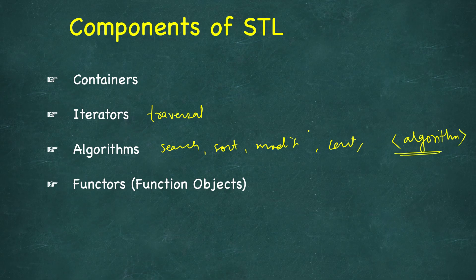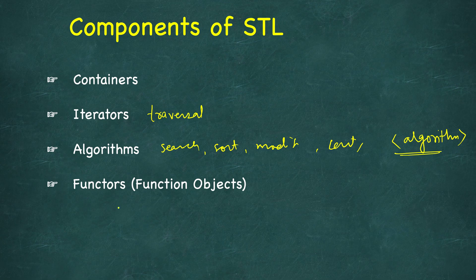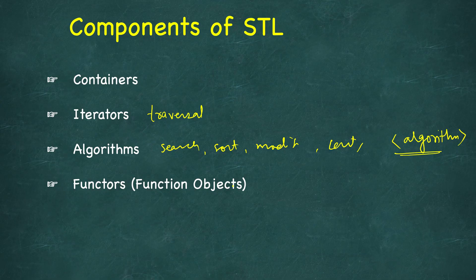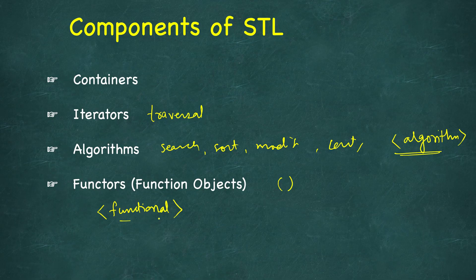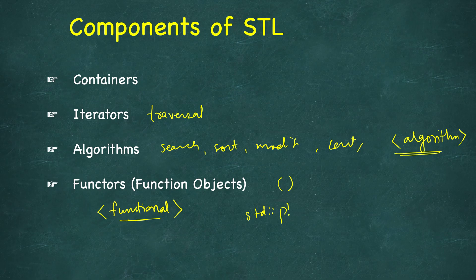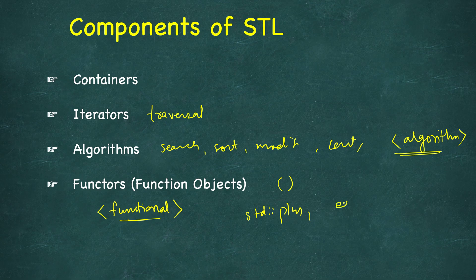These are generally defined in algorithm.h, so you need to include this algorithm if you want to use the algorithms present in the STL. Then we have functors, also called function objects. These are classes which overload this parenthesis operator such that they can be used as functions that maintain state and can be parameterized.